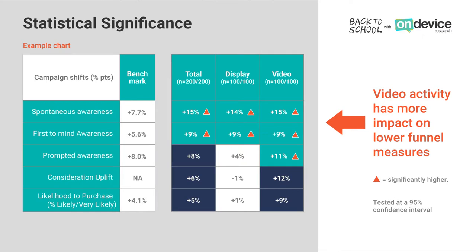It's also important, when you get the delta between the two groups, that the result is a reliable result. What statistical significance measures is how reliable that is — it helps quantify whether the result happened because someone was exposed to the advertising, or whether it happened by chance or sampling error.